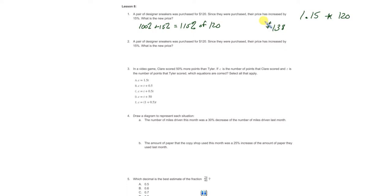You could use a double number line for this, but I am a fan of the shortcut. A pair of designer sneakers was purchased for $120. Since they were purchased, their price has increased by 15%. That is the exact same problem, so you can just skip that. Just realize that that was a repeat. So there you go. Enjoy. Freebie.